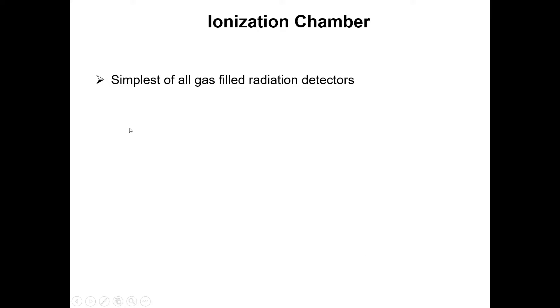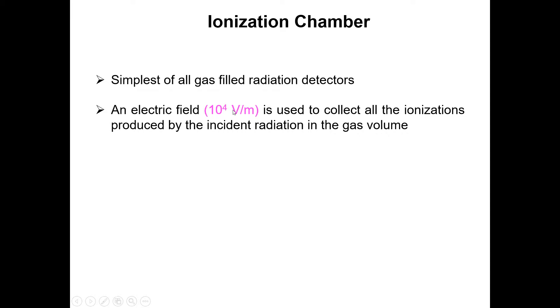This kind of chamber, this kind of radiation detector, is one of the simplest of all gas-filled radiation detectors. In this kind of radiation detector, we apply an electric field equal to 10 raised to the power of 4 volts per meter to collect all the ionization produced by the incident radiations.